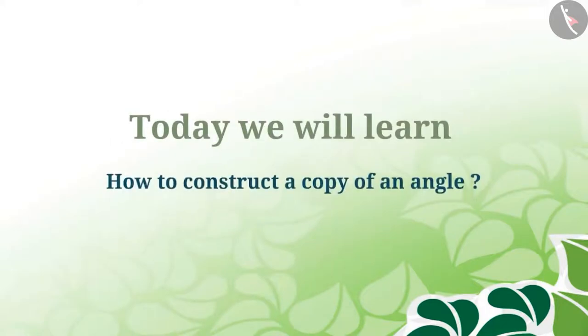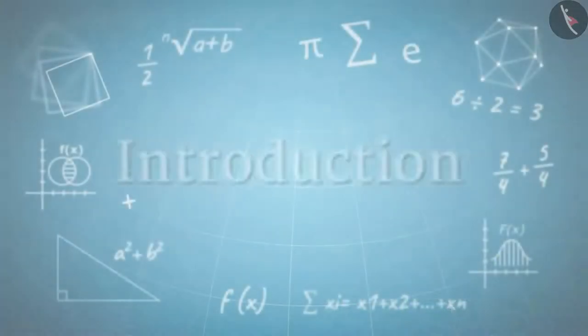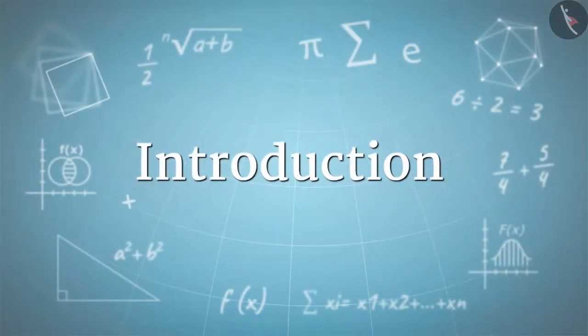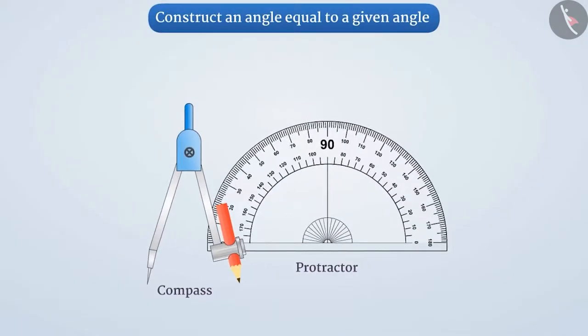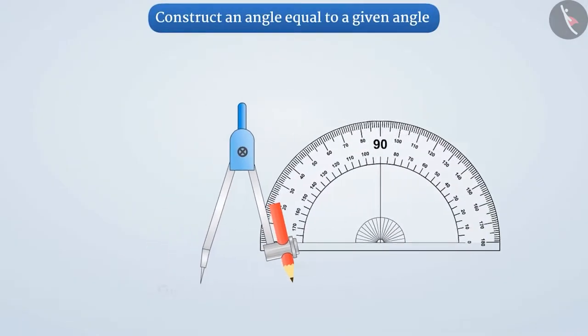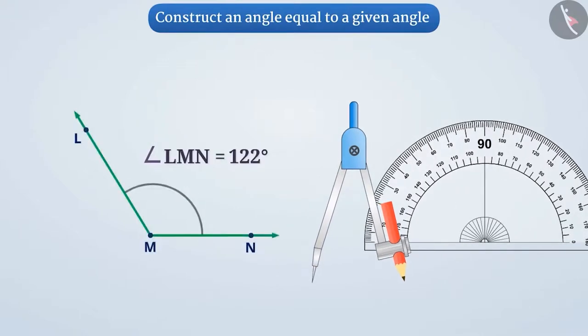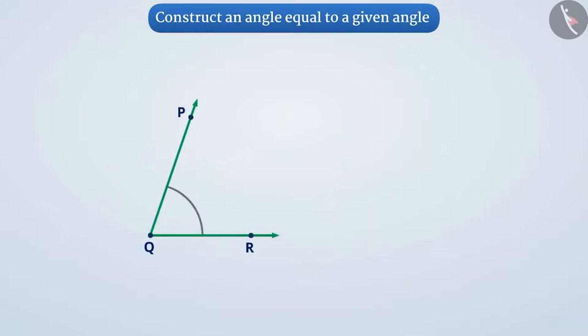Today we will learn how to construct a copy of an angle. We have learned how to construct an angle according to the given measurement with the help of a protractor and compass. We will learn the method by which we will be able to make an angle equal to an angle whose measurement is not known to us. Let us understand this method.